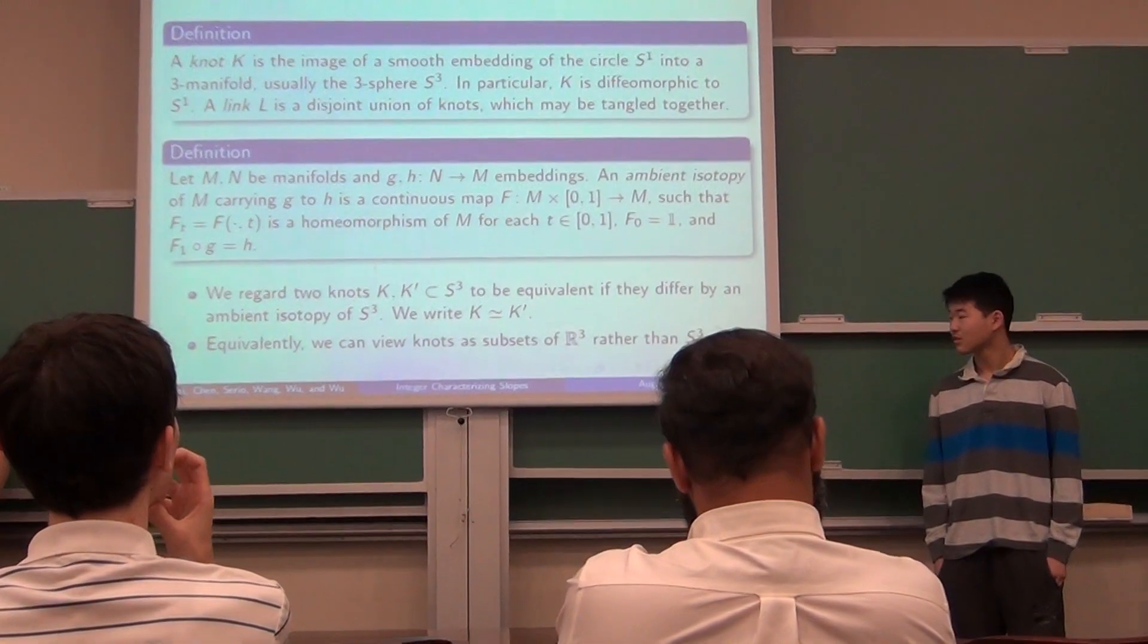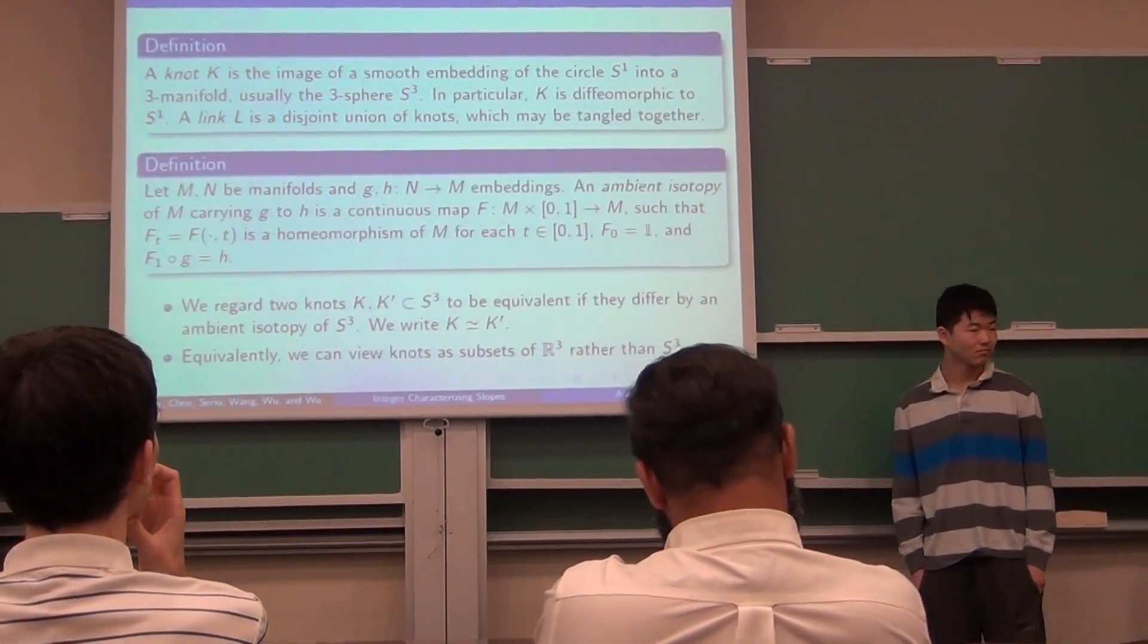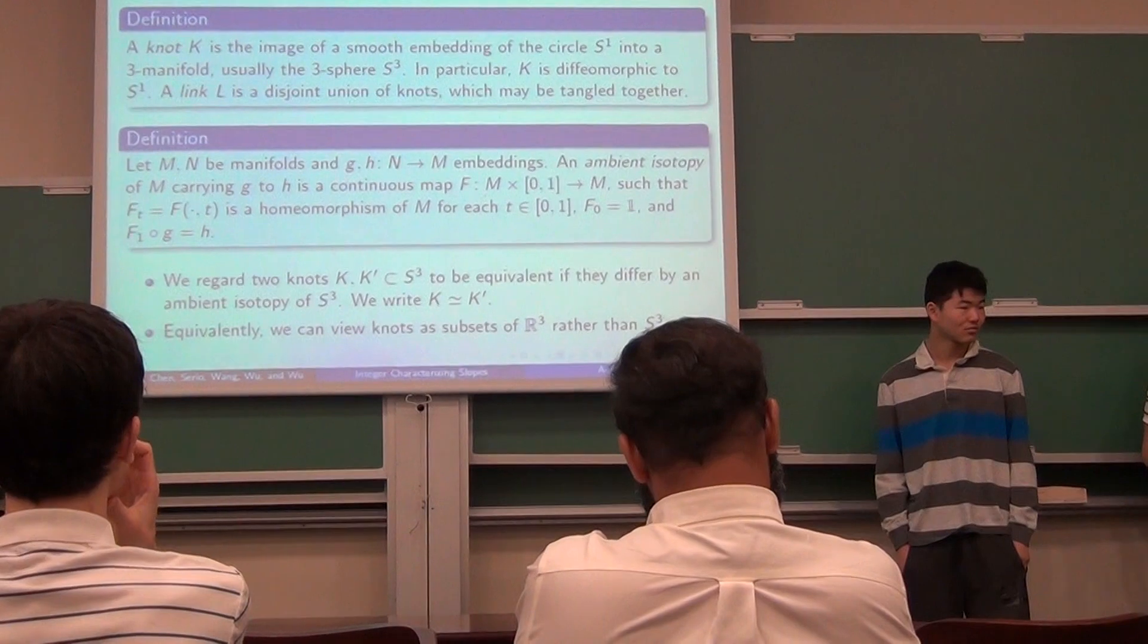In particular, a knot is diffeomorphic to a circle. And a link is just a disjoint union of knots that might be tangled together in some way.